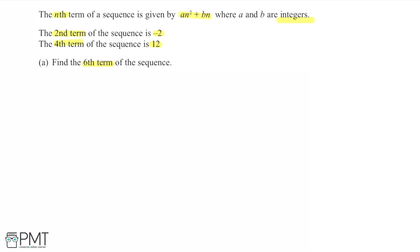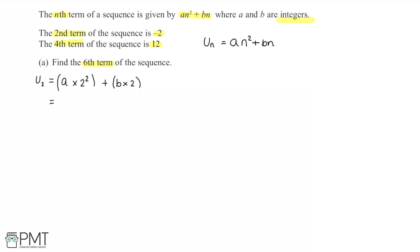Starting with the first equation: we know the second term is minus 2, which we can call u2. The general term un equals an squared plus bn. Since u2 is when n equals 2, we substitute 2 in: a times 2 squared plus b times 2, which simplifies to 4a plus 2b. So u2 equals 4a plus 2b.